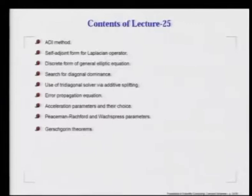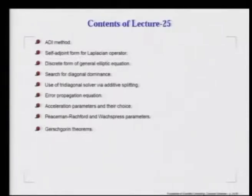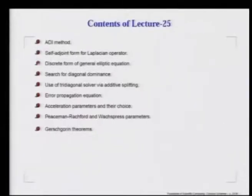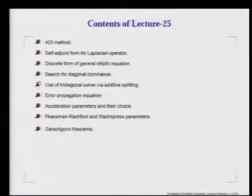In today's lecture number 25, we start our discussion on the alternating direction implicit method. We talk about a general elliptic equation, which could represent either the Laplace's equation, the Poisson equation, or the Helmholtz equation. We notice that it requires discretizing the Laplacian operator, which is best discretized by casting it in a self-adjoint form. The self-adjoint form leads us to a diagonally dominant matrix. This ADI method utilizes analytic solutions of tri-diagonal linear algebraic equations.